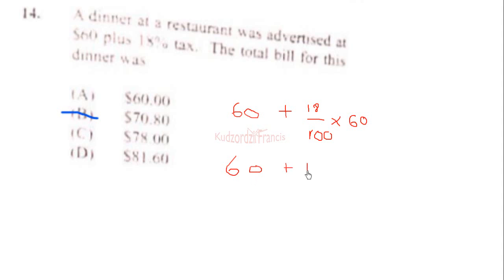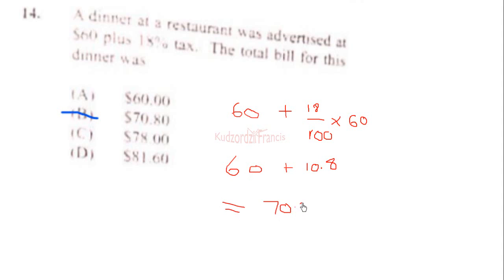This gives us 60 dollars plus 10.8, because we cancel and are left with 18 times 6 which is 108 over 10, which is 10.8. This simplifies to 70.8, that is 70 dollars and 80 cents. The correct answer is B.